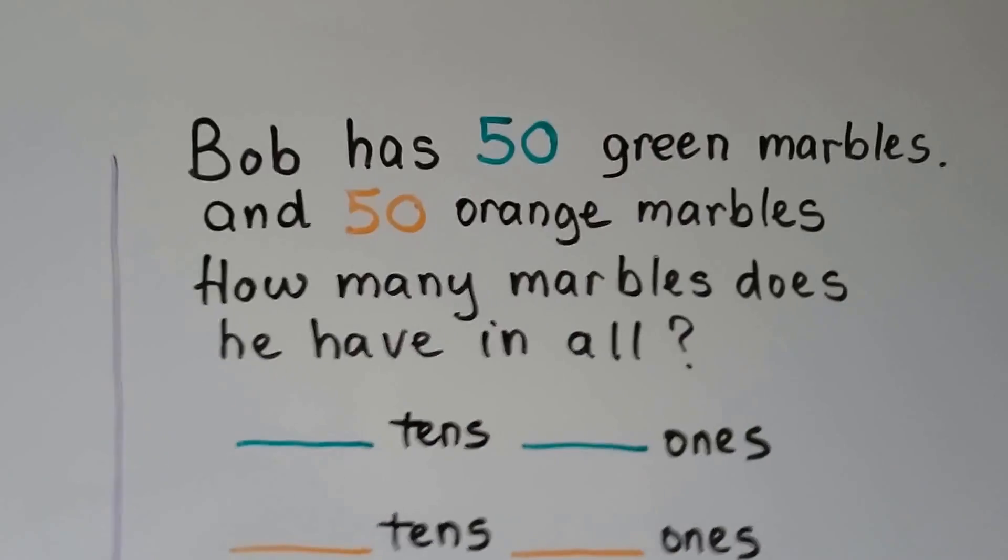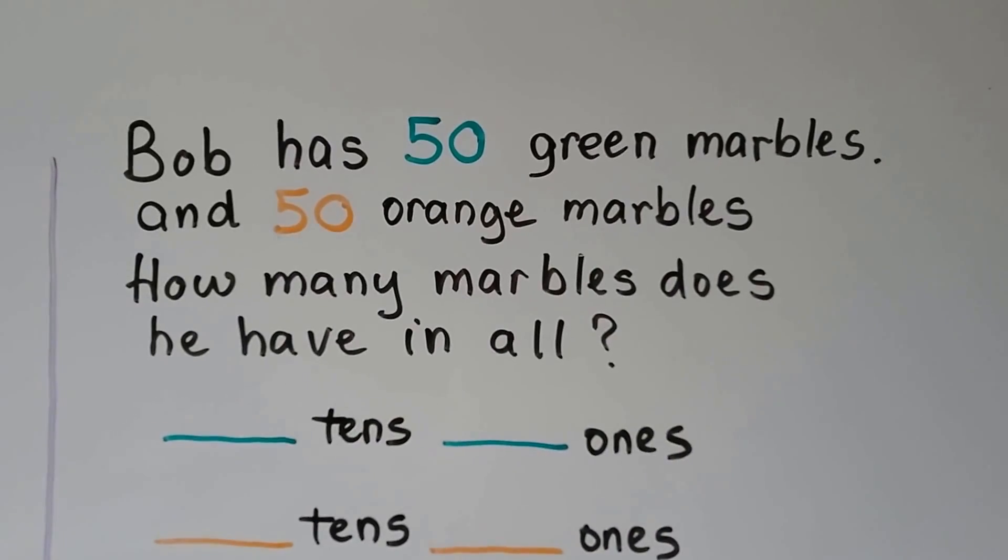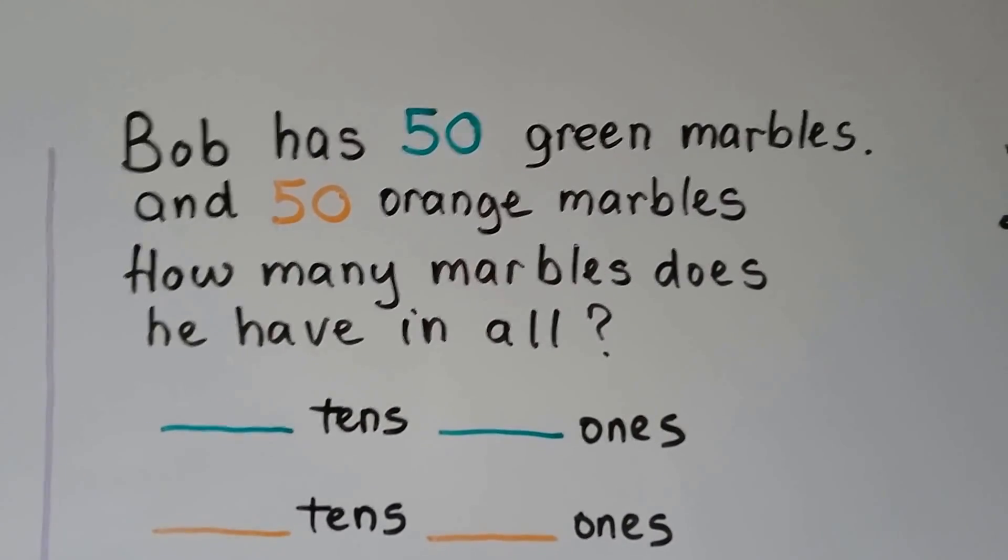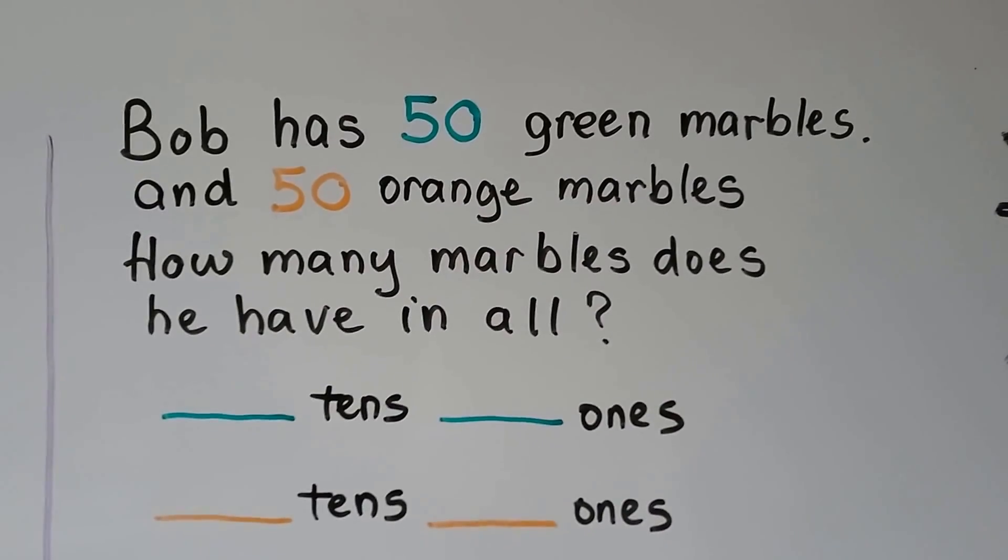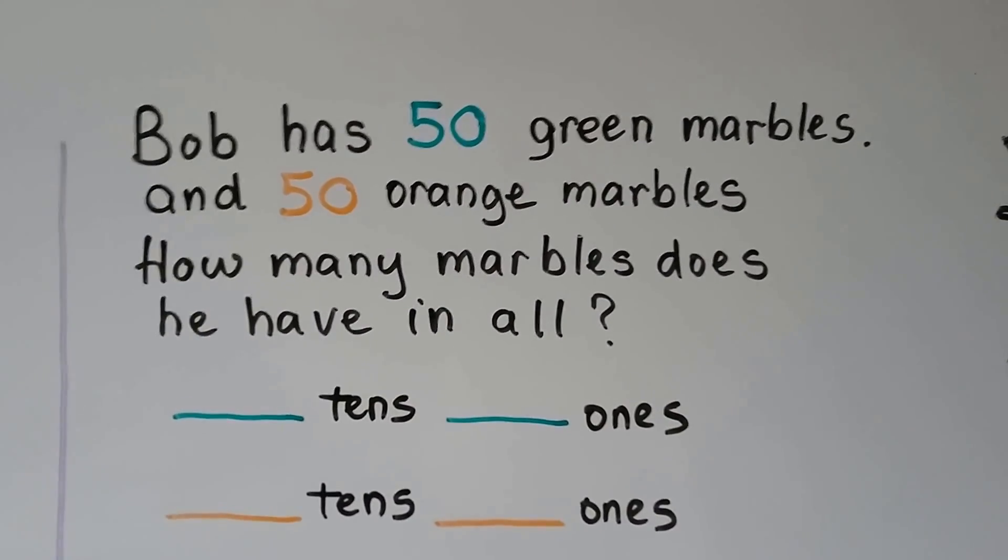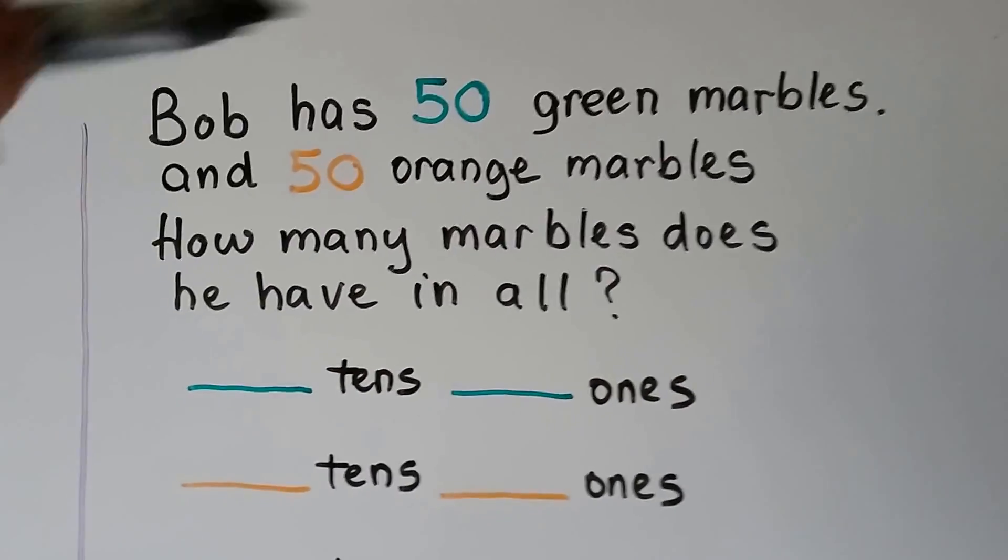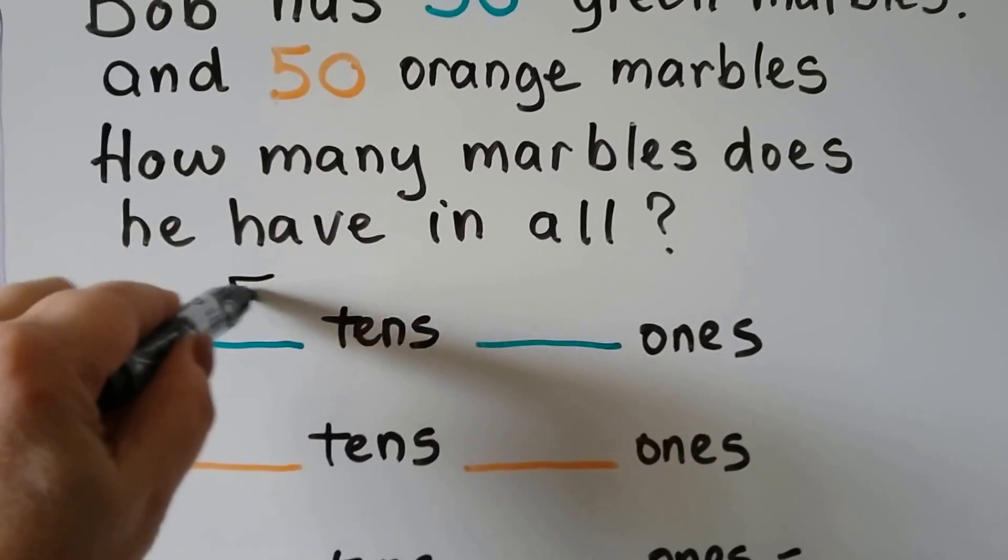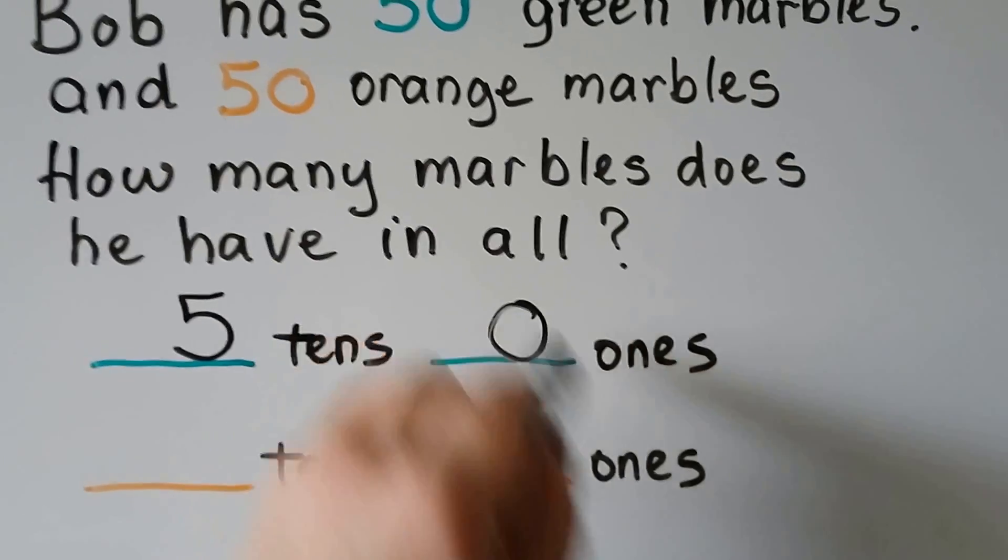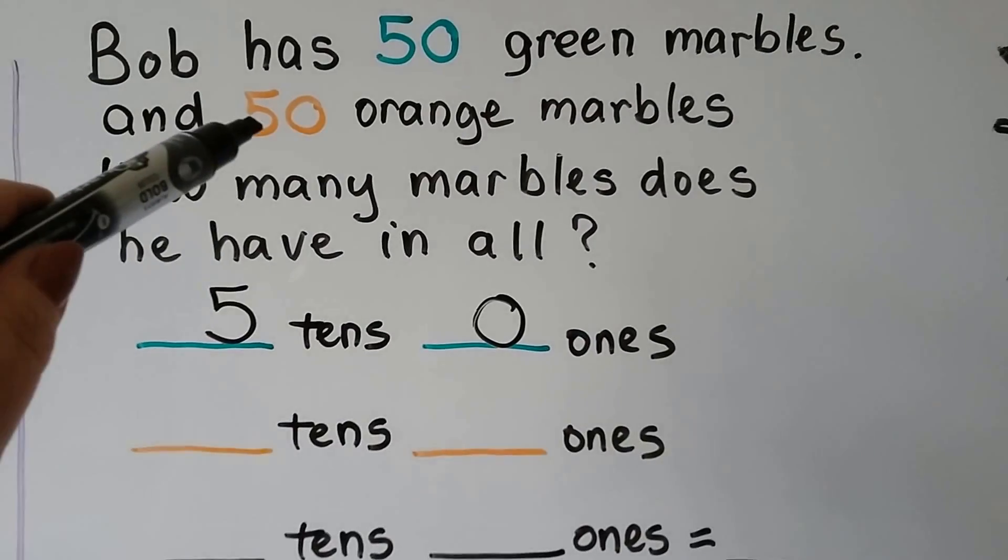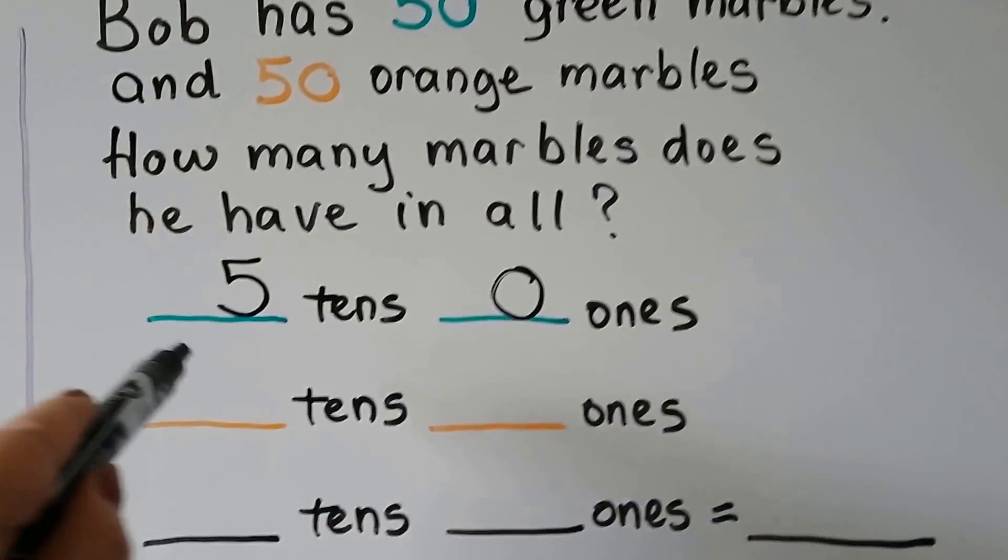Bob has 50 green marbles and 50 orange marbles. How many marbles does he have in all? Well, the green marbles, he has 5 tens and zero ones. The orange marbles, he has 5 tens and zero ones.